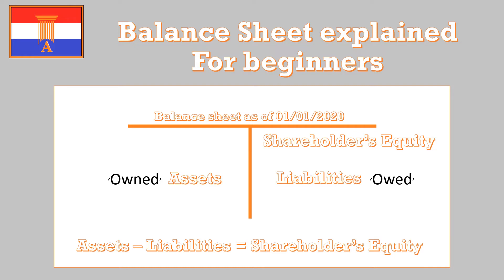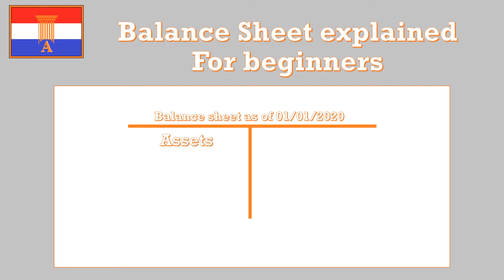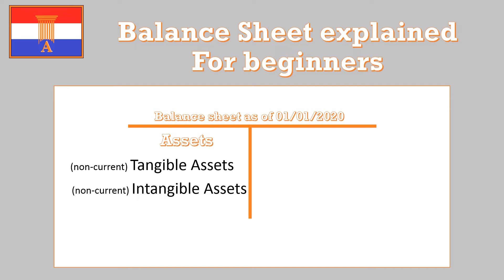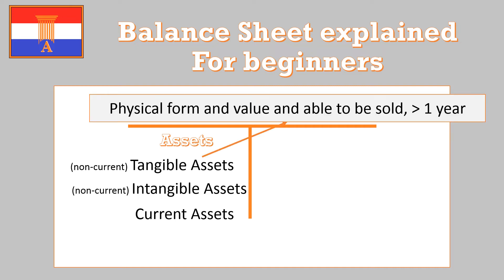Let's dive deeper into assets. There are several kinds: non-current tangible assets, non-current intangible assets, and current assets. Tangible assets are in physical form, have value, and you are able to sell them, but you do not expect to sell them within a year — you expect to use them for longer than a year. Think about a house, a building, a factory, a car, a truck, a piece of land, a desk, or a computer. You don't buy those expecting to sell them in a year; you use them for several years.